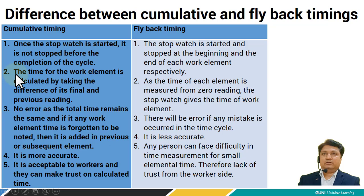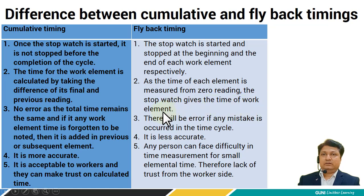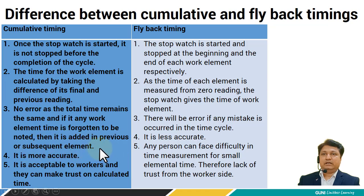In cumulative timing, the time for each work element is calculated by taking the difference of its final and previous reading. While in flyback timing, as the time of each element is measured from zero reading, the stopwatch directly gives the time of that element. In cumulative timing there is no error, because if any work element time is missed, it is added to the previous or subsequent element.